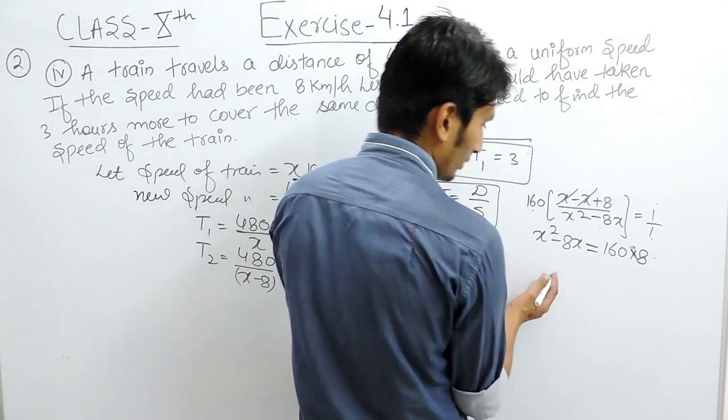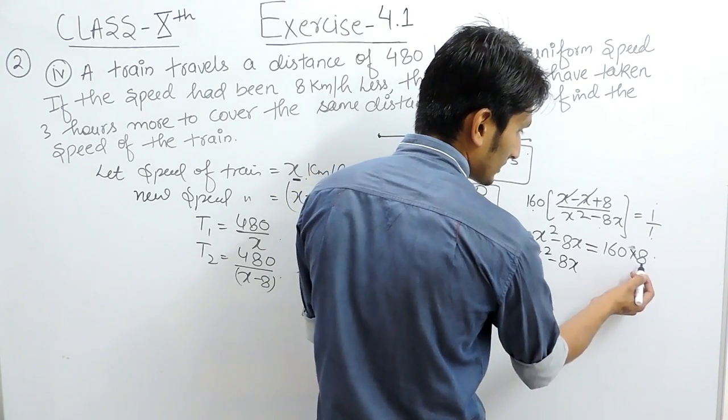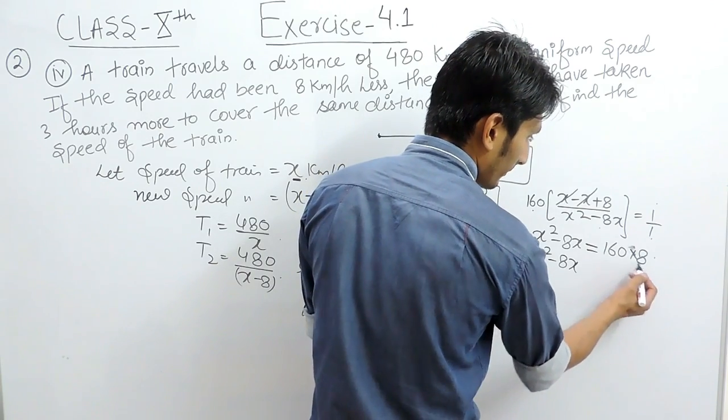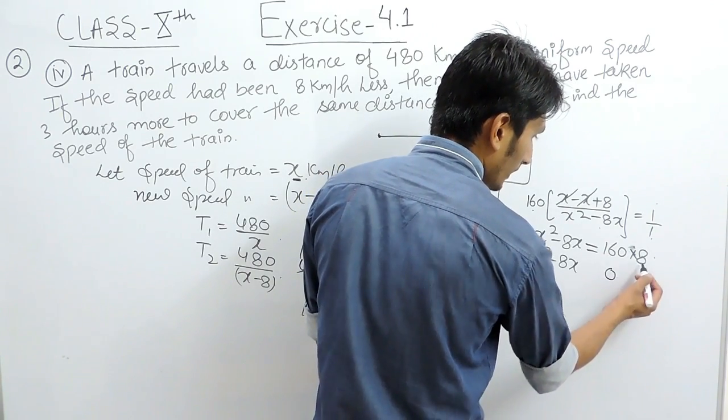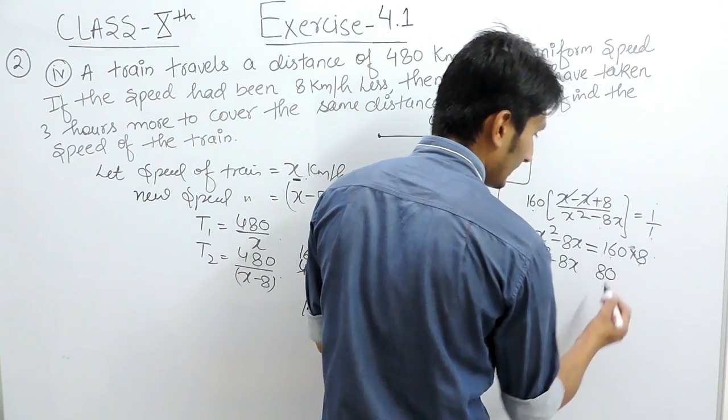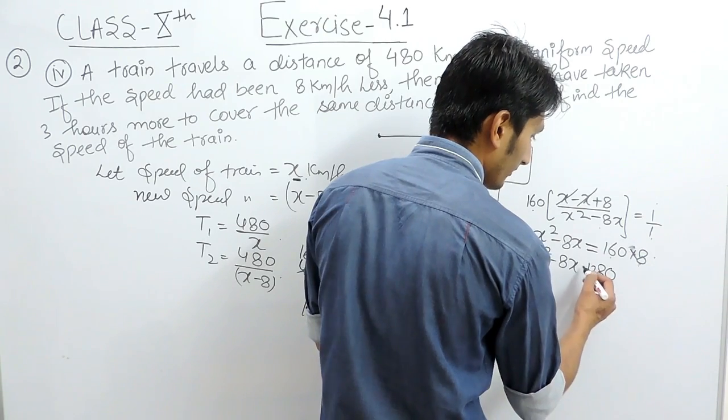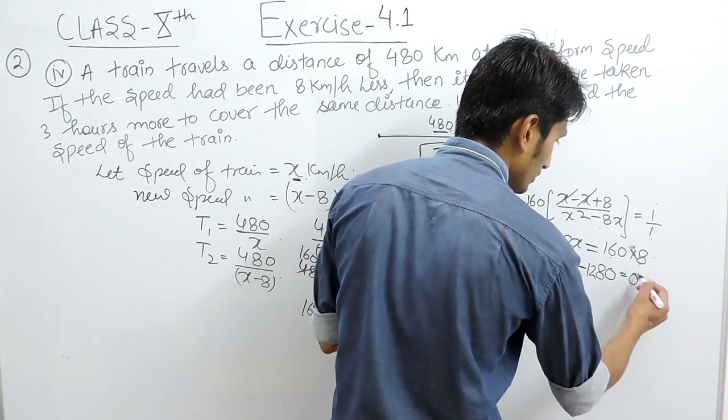Now we know that the equation must be x squared minus 8x. And this when multiplied and shifted to right hand side will become 8 multiplied by 160: 8 times 0 is 0, 8 times 6 is 48 carry 4, 8 into 1 is 8 plus 4 is 12, with negative sign. This equals 0.